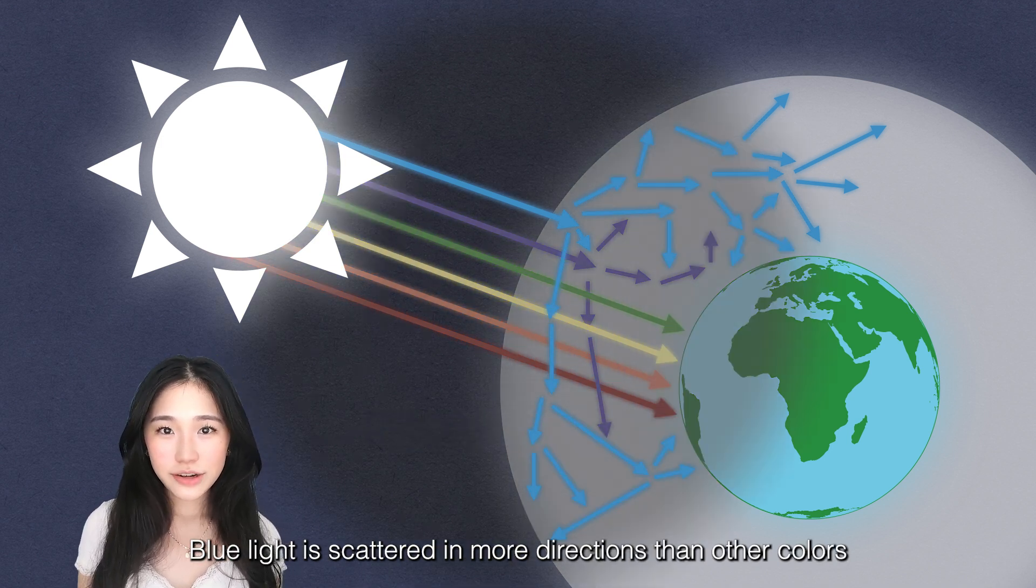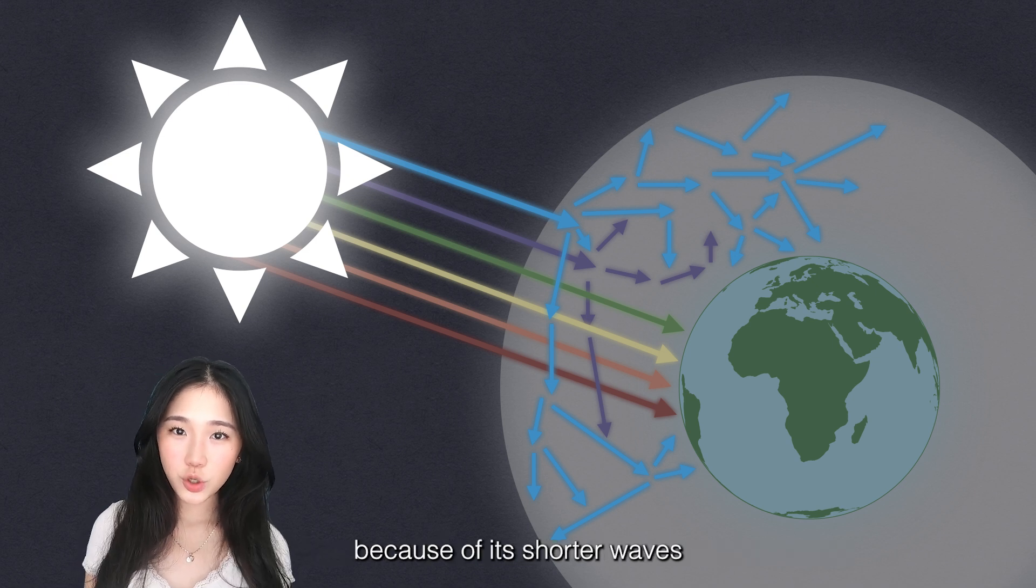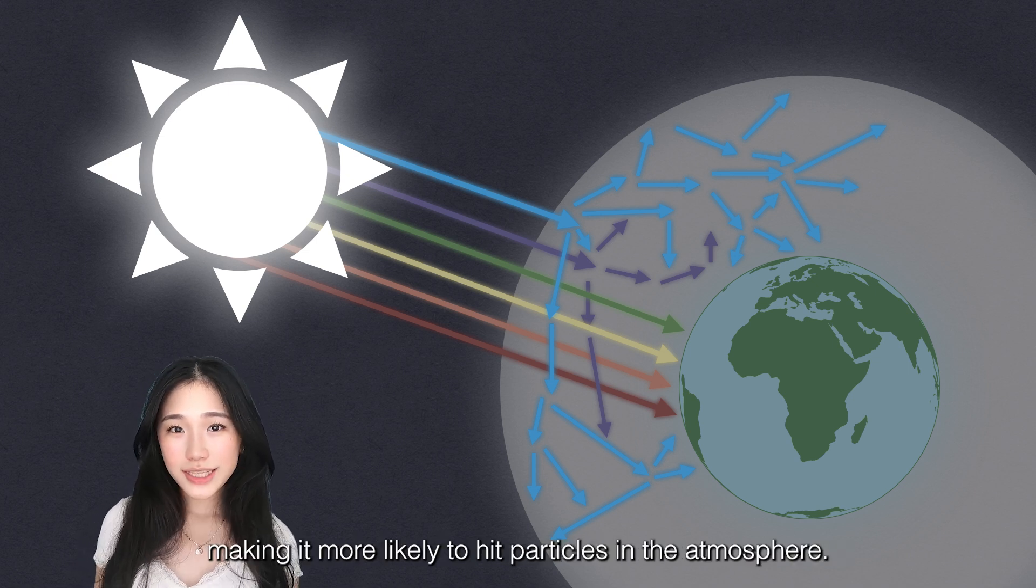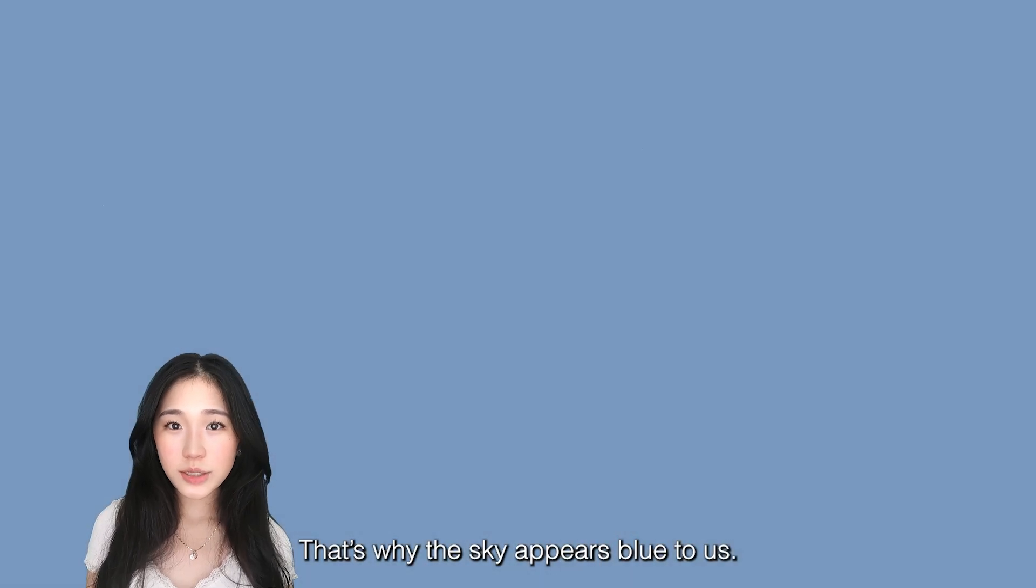Blue light is scattered in more directions than other colors because of its shorter waves, making it more likely to hit the particles in the atmosphere. That is why the sky appears blue to us.